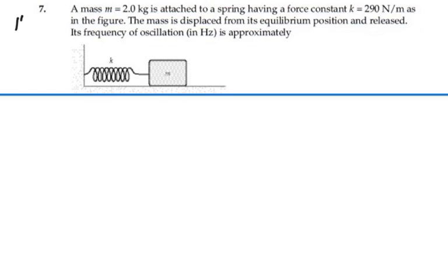Here's problem 15.7. A mass of 2 kilograms is attached to a spring having a force constant k equal to 290 newtons per meter, as in the figure. The mass is displaced from its equilibrium position and released. Its frequency of oscillation in hertz is approximately...